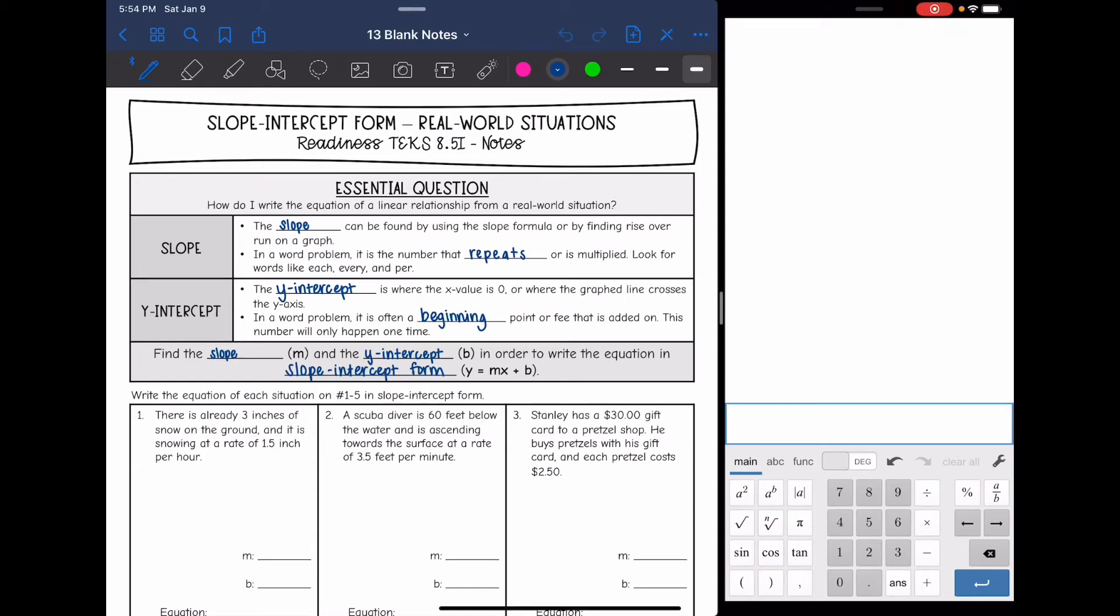Hey guys, today we are going to look at writing equations in slope-intercept form that represent real-world situations. So again, we're just writing equations in y equals mx plus b, and to do that we need two things: the slope for m, and the y-intercept for b.